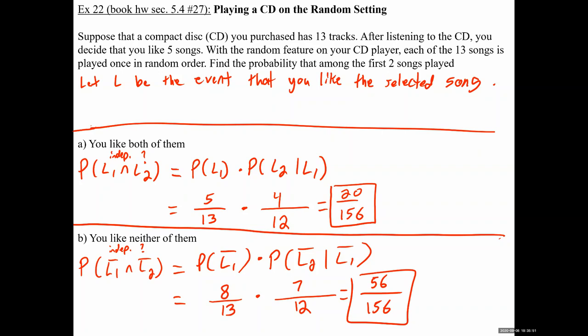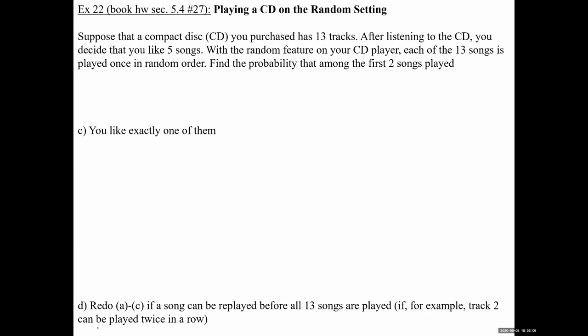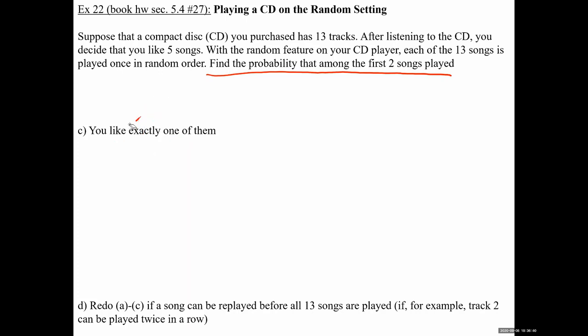Parts A and B are problems like ones we've already done — nothing new there. The something new, what I'm calling more complicated probability problems, is Part C. Find the probability you like exactly one of them. This one is not as easy as the others. We have to rephrase it. It says 'exactly one,' not 'at least one.' If it said 'at least one' we'd have a formula, but it says exactly one, so we have to rephrase.